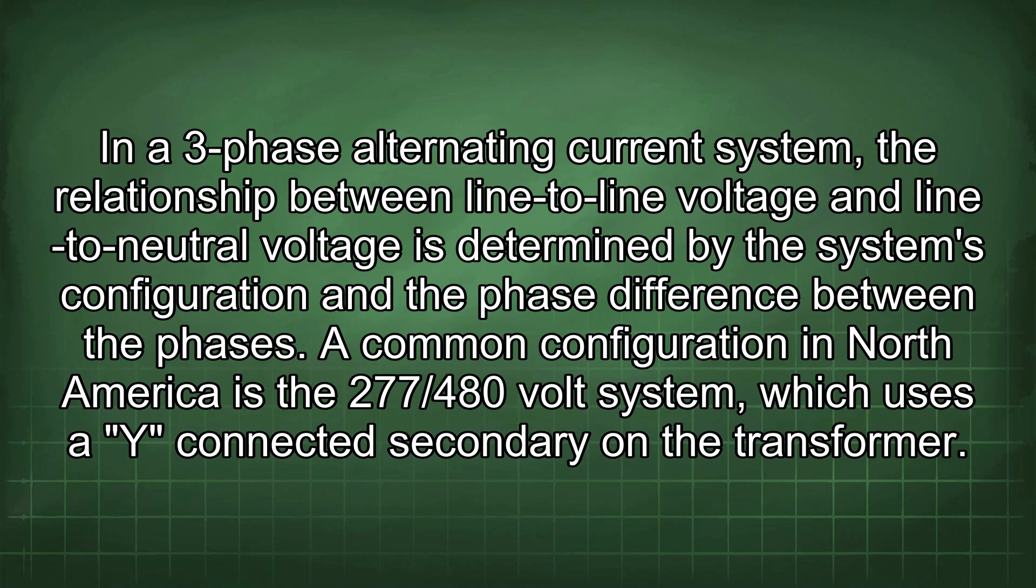In every phase alternating current system, the relationship between line-to-line voltage and line-to-neutral voltage is determined by the system's configuration and the phase difference between the phases. A common configuration in North America is the 277/480 volt system, which uses a Y-connected secondary on the transformer.